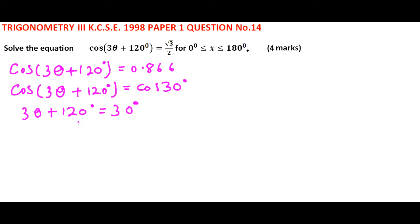Take 120 to the other side, so 3θ = -90 (30 minus 120), implying θ = -30°. So that is one angle.